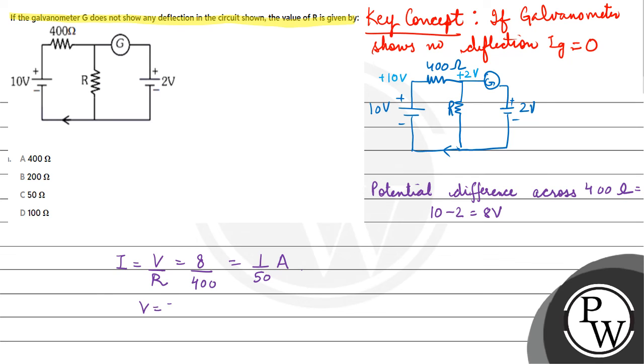Now we need to find resistance R. Across R potential difference is 2 volts. R equals V upon I, so R equals 2 divided by 1/50. This gives us R equals 100 ohm.